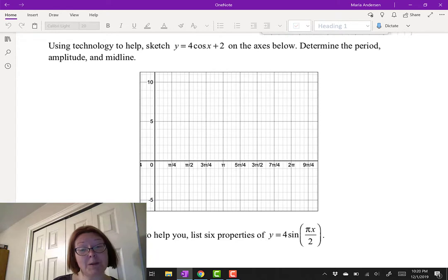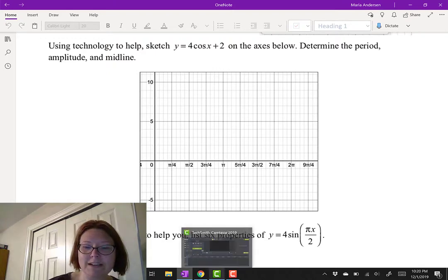We're going to determine the period, the amplitude, and the midline for this function. So let's jump over to Desmos and graph y equals 4 cosine x plus 2.